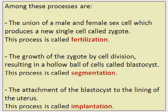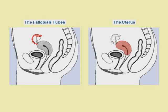Among these processes are: first, the union of a male and female sex cell, which produces a new single cell called a zygote — this process is called fertilization. Second, the growth of the zygote by cell division, resulting in a hollow ball of cells called a blastocyst — this process is called segmentation. Finally, the attachment of the blastocyst to the lining of the uterus — this process is called implantation. Now let's look at these processes a little more closely.